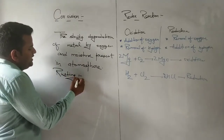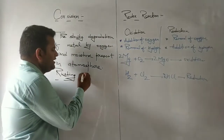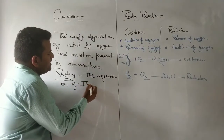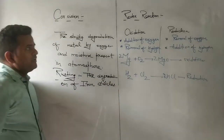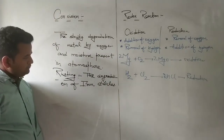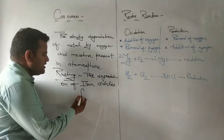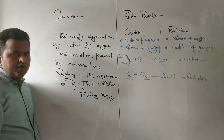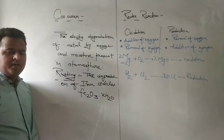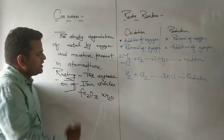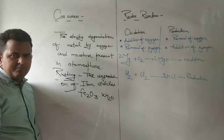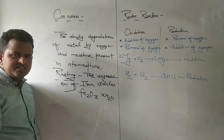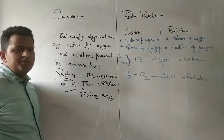Rusting is the degradation of iron articles because of oxygen, moisture, and different reactive gases present in the atmosphere. The formula for rust is iron oxide·xH₂O (Fe₂O₃·xH₂O), where x can be 2 or 3 depending on how long the iron article is in the presence of moisture and oxygen. Similarly, the black appearance on silver is oxidation of silver, and the greenish appearance on copper is oxidation of copper — both are examples of corrosion.